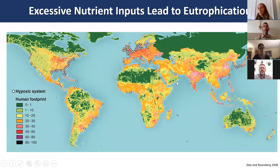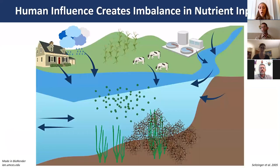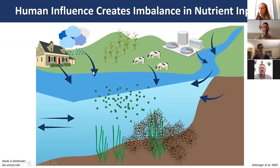Humans exert excess nutrient inputs to coastal systems by creating an imbalance in nutrient fluxes—most commonly from wastewater treatment plant effluent, agricultural fertilizer and manure runoff, leaky septic systems, over-fertilization of lawns, or not picking up after pets.